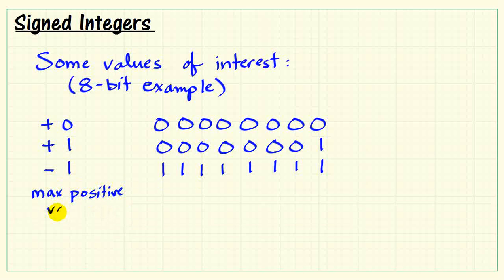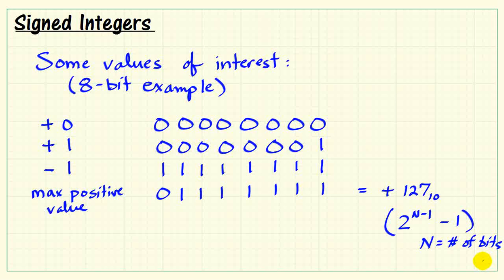What's our maximum positive value? If it's positive, that means we certainly don't want to activate our negative weight, but we do want to activate all of the positive weights. When written out as a decimal value, this is positive 127. In a general sense, we could calculate that as 2 to the n minus 1, then subtract one more, where n is the number of bits in the binary pattern.